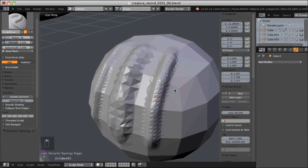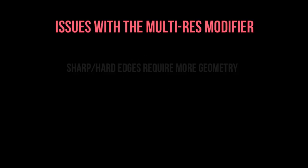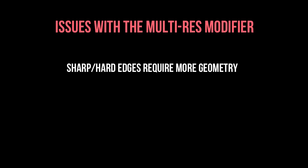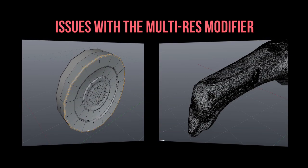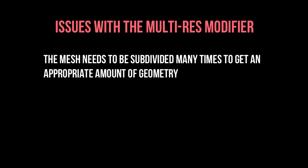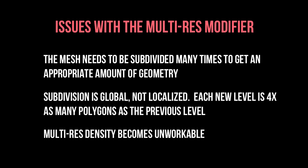However, with the recent addition of dynamic topology, hard surface sculpting is much more achievable and practical. Before dynamic topology we only had the multi-resolution modifier option for sculpting. The problem is that hard surfaces usually have sharp edges which require more geometry to define that hard edge. With a multi-res modifier we would have to subdivide our mesh many times, and since multi-res subdivides globally, our mesh quickly becomes too dense for Blender to handle smoothly but not dense enough for hard-edged definition.